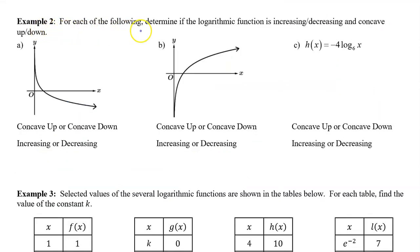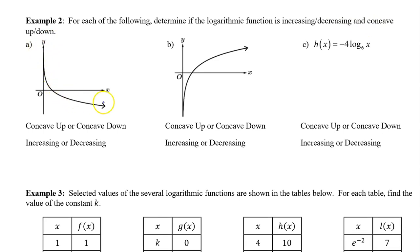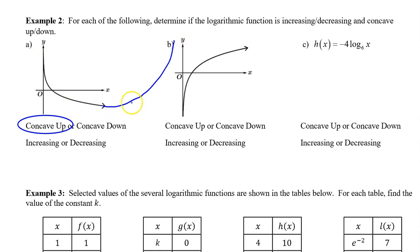Example 2: For each of the following, determine if the logarithmic function is increasing or decreasing, and concave up or concave down. For part A, we are given the graph, and we can plainly see that this logarithmic curve is concave up. Concave up means being part of a bowl shape. We can also see that from left to right the curve is decreasing — it is falling from left to right. So: concave up and decreasing.